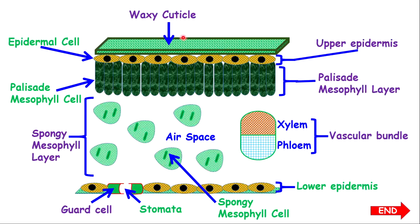Now below the waxy cuticle, we have what I call the upper epidermis. The upper epidermis is made of cells which we call epidermal cells. For exam purposes, if you see one cell labeled, that is an epidermal cell. The entire region is the upper epidermis.